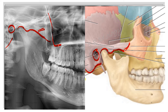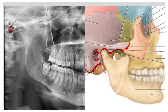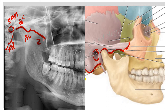The zygoma appears as a U-shaped structure in the OPG radiograph. This is the zygoma or the zygomatic process of the maxilla. To summarize: this is the external auditory meatus, the mastoid process, the glenoid fossa, the articular eminence, then the zygomatic arch, and this is the zygomatic process of the maxilla or the zygoma.